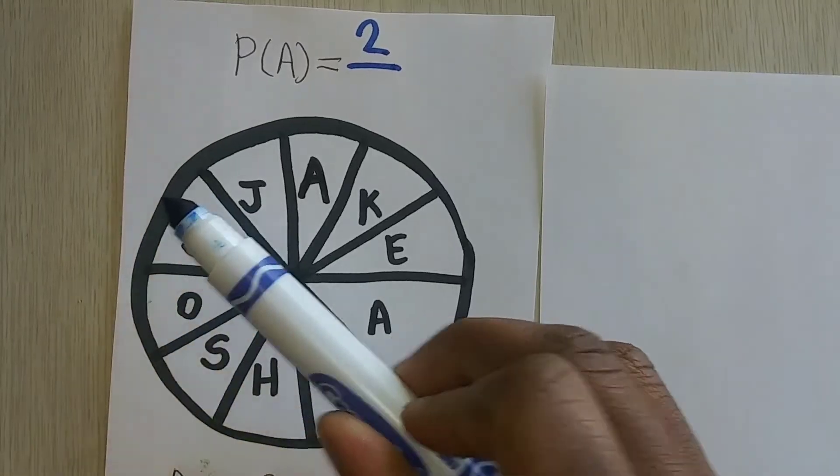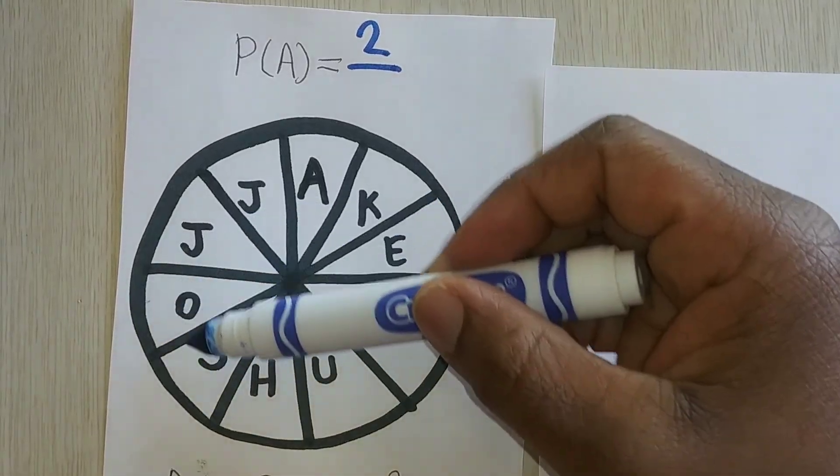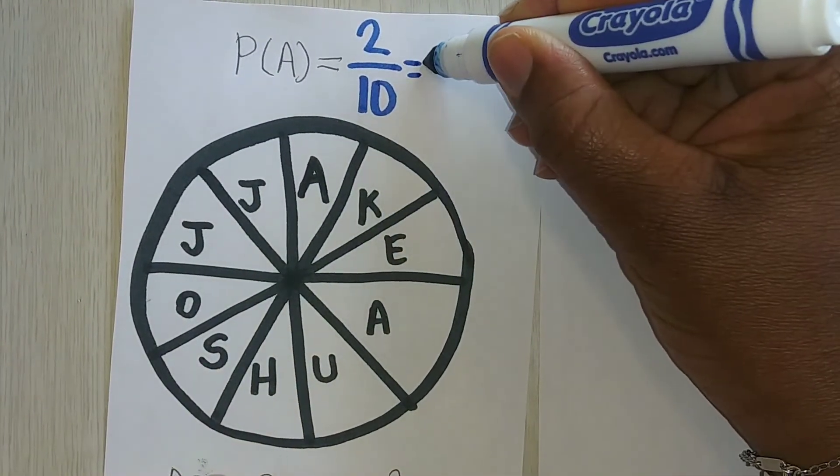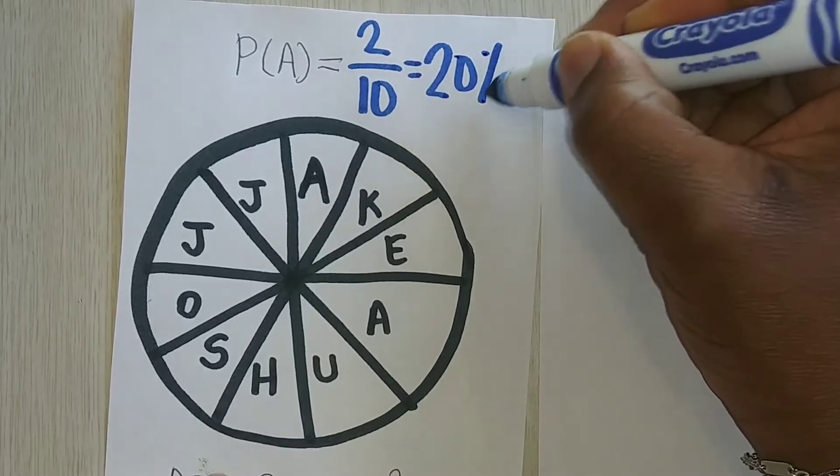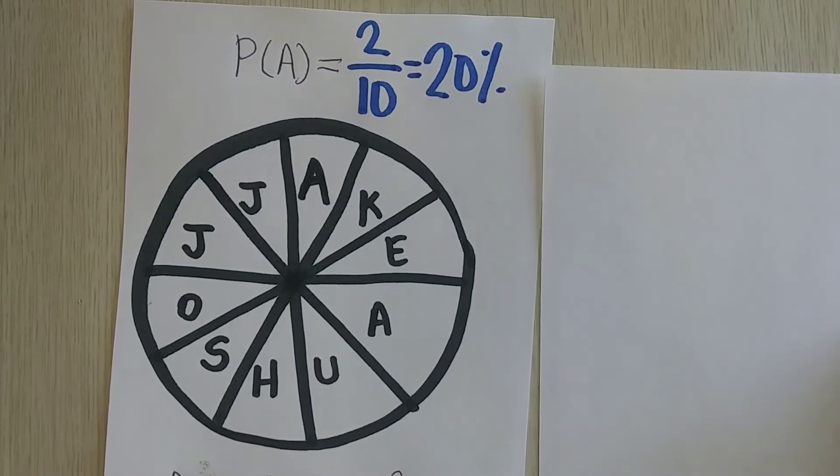But if I split this in half, I see that there's one, two, three, four, five on this half. So that means there's five on this half, which is two times five, which is equivalent to 20%. This is theoretically what the math is telling us.